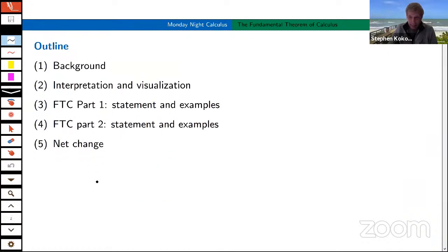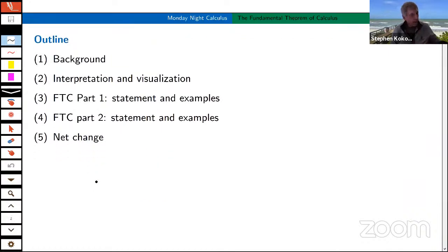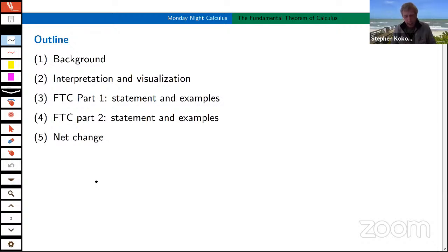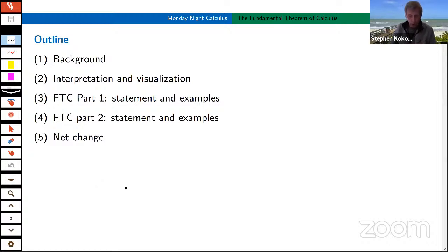I'm going to give you an outline tonight. I'll give a little bit of background first, then I'm going to try to interpret this theorem. We can actually visualize part of this theorem, so I'll draw a couple of graphs. The FTC, as you know, we usually split into two parts. Part one — I'll give a statement of that, lead into it with a couple of examples, do the same with part two, and then I'll end talking about net change, which appears frequently on the AP calculus exam.